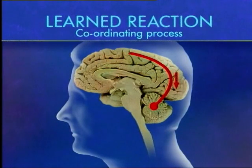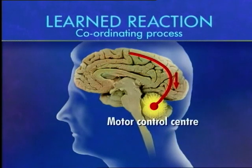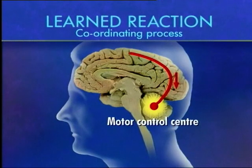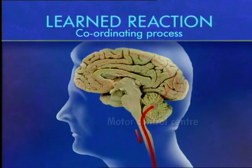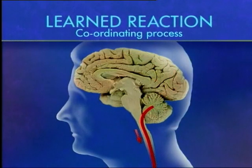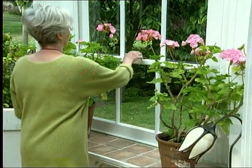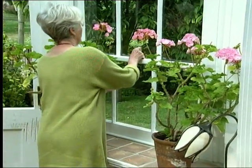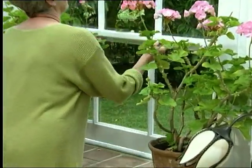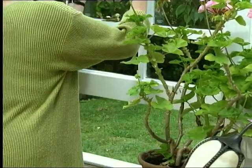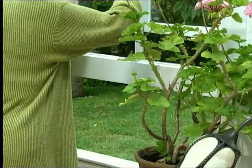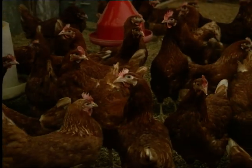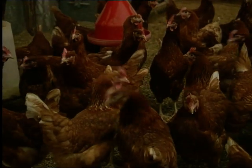The outgoing impulse passes through the motor control center, down the spinal cord, and connects with a motor neuron and effector organ as before. But it took a human to process this learned reaction. Hens, by contrast, are only bird brains.